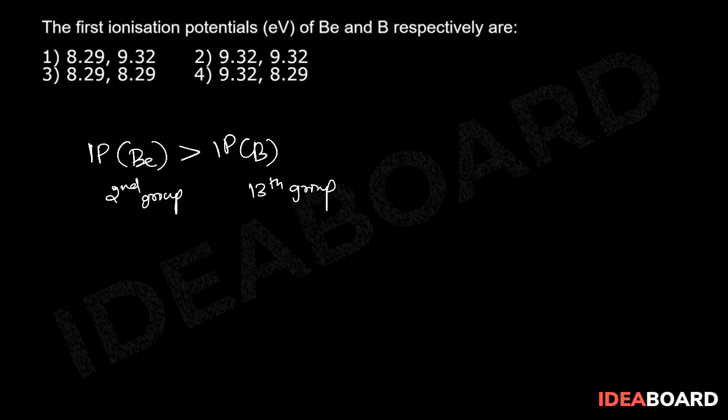The electronic configuration of beryllium is 1s² 2s², and that of boron is 1s² 2s² 2p¹. In beryllium we are removing 2s electrons.